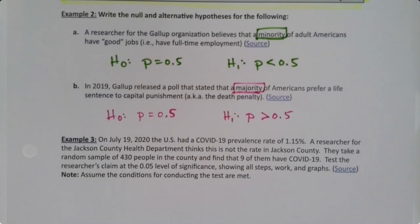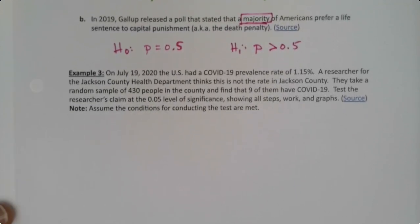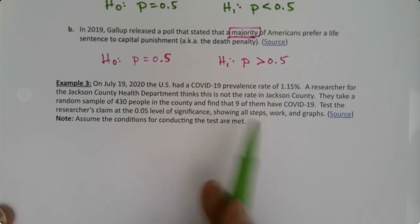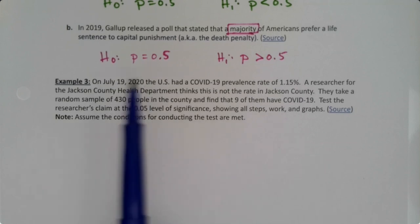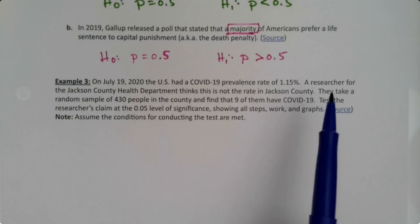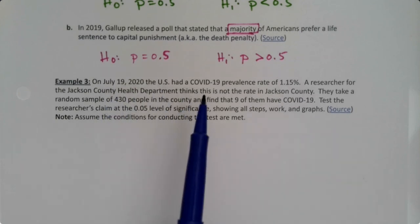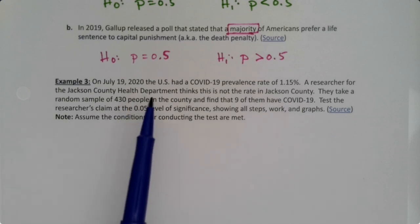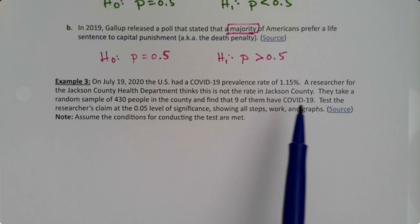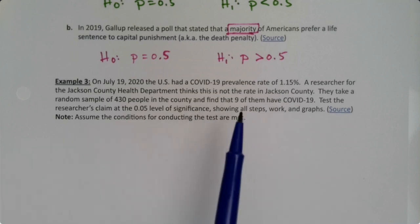Now let's do another one. This one uses the prevalence rate. On July 19th, 2020, the US had a COVID-19 prevalence rate of 1.15 percent—this is July 2020, after the pandemic hit. A researcher for the Jackson County Health Department thinks this is not the rate in Jackson County. They take a random sample of 430 people in the county and find that 9 of them have COVID-19. Test the researcher's claim at the 0.05 level of significance, showing all steps, work, and graphs.